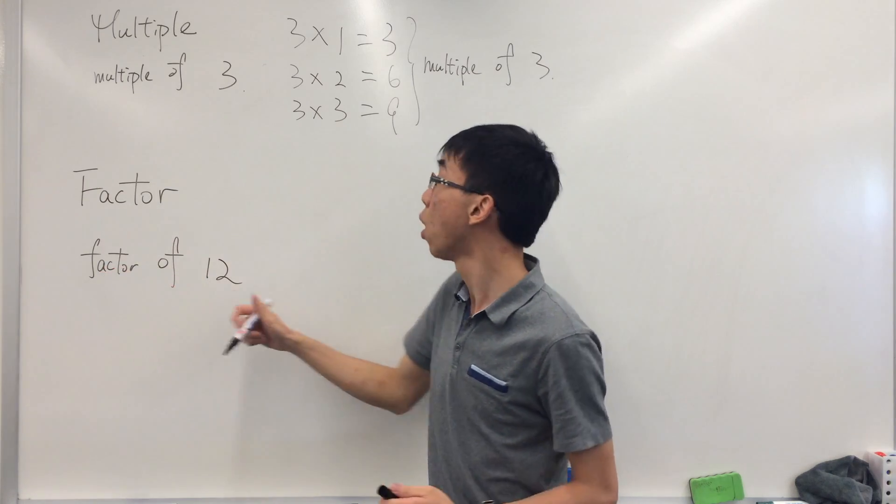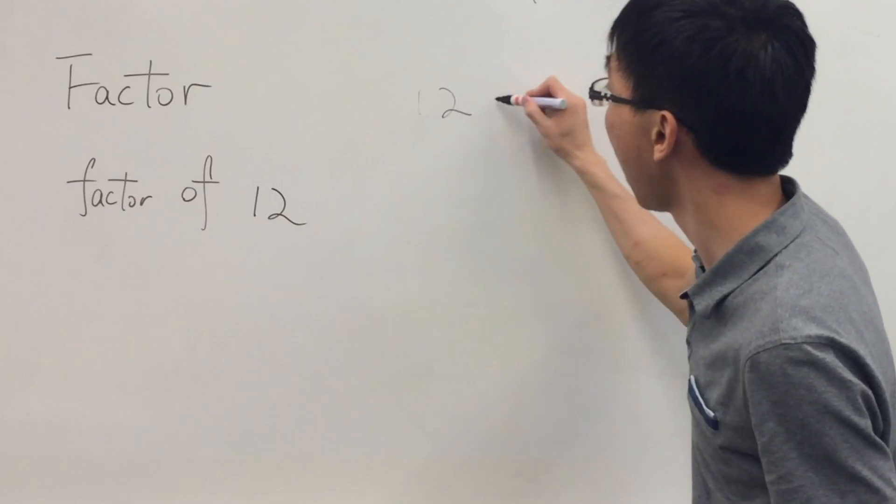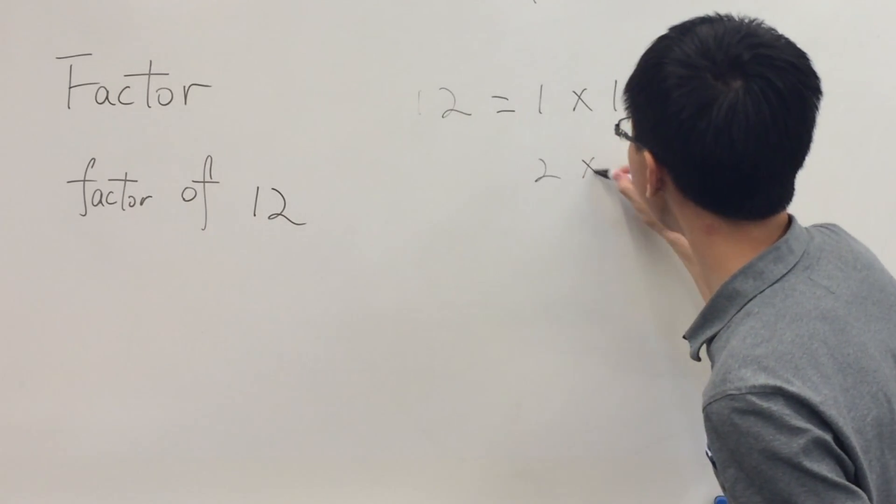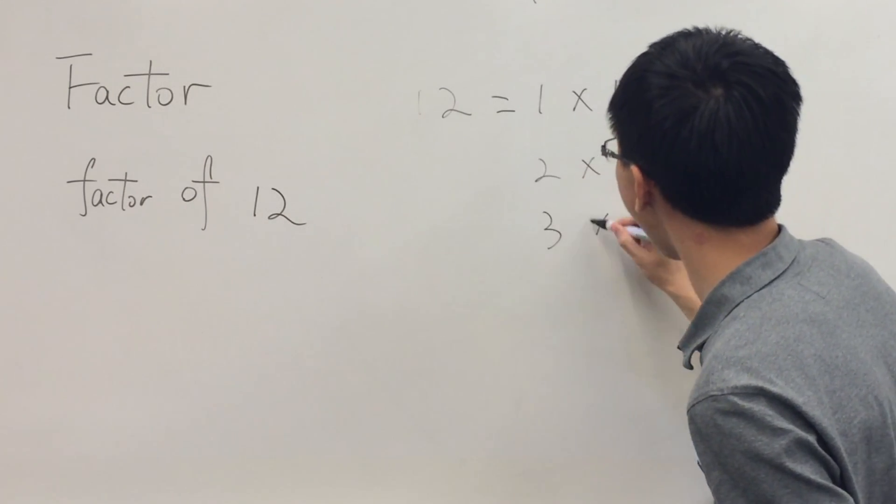For example, factors of twelve, we will try to make twelve as one times twelve, or we will look at it as two times six, three times four.